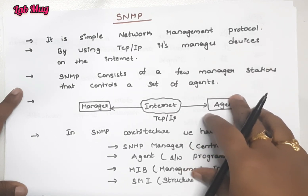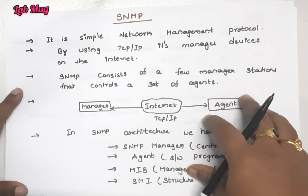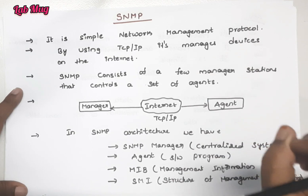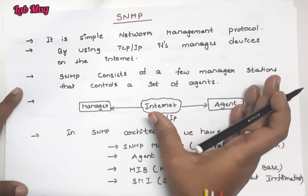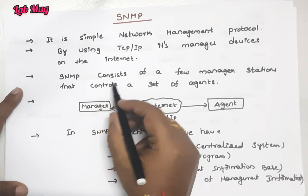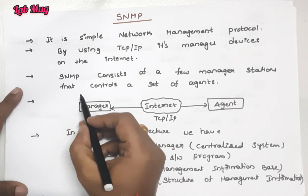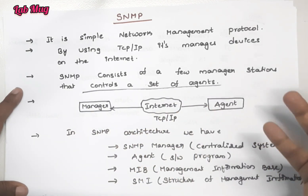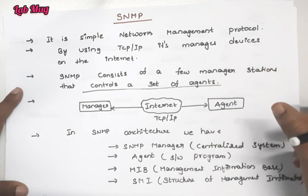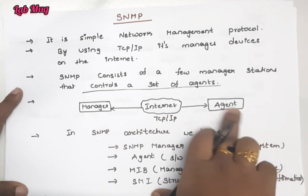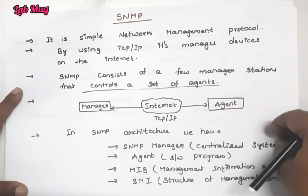SNMP protocol provides a set of operations to maintain the internet. All operations used to maintain the internet are based on SNMP. It consists of a few manager stations, and each manager station controls a set of agents. Each agent manages a particular station, and that manager-to-agent managing is performed based on internet connections.